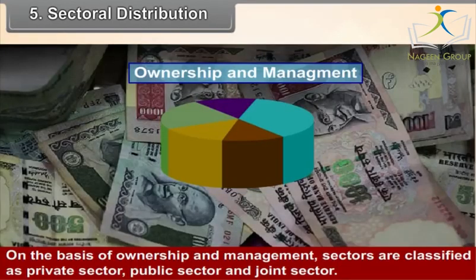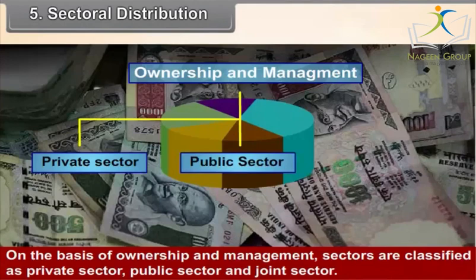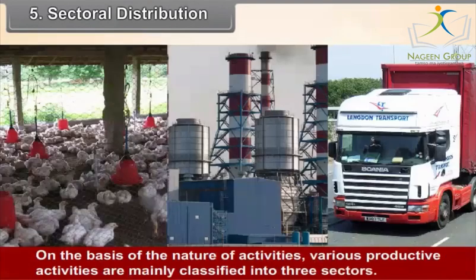On the basis of ownership and management, sectors are classified as private sector, public sector, and joint sector. On the basis of the nature of activities, various productive activities are mainly classified into three sectors.